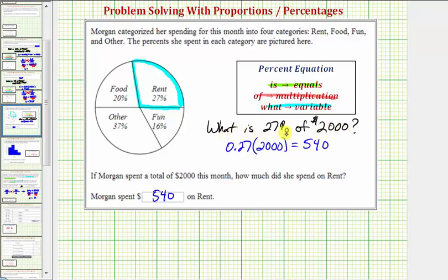So using our basic question here, notice how the first word we see is the word 'what.' So we could write down a variable for the unknown. Let's use r for the rent amount. Next we have the word 'is,' is means equals. So now we have r equals.